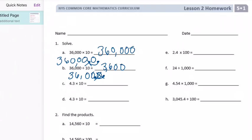Part C, we have 4.3 times 10. This is where it comes into play that we can't just add a zero, because if I just added a zero to the end of this, we'd have the same number. 4.3 times 10 is not 4.30. Those are equivalent. So we need to be moving the decimal point. Think back to what we were doing before, where we were shifting the place values. I'm going to shift the place values one place to the left, or move the decimal point one place to the right. We end up with 43.